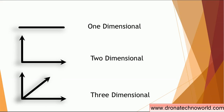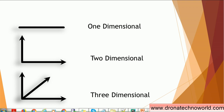Before going to see the two-dimensional list, we need to understand the basic concept about dimensions in mathematics or physics. You might have learned this kind of concept: one-dimensional, two-dimensional, and three-dimensional. Any object which can be defined in one dimension is called one-dimensional. The two-dimensional has two directions, so any object which can be defined by two directions is called two-dimensional.